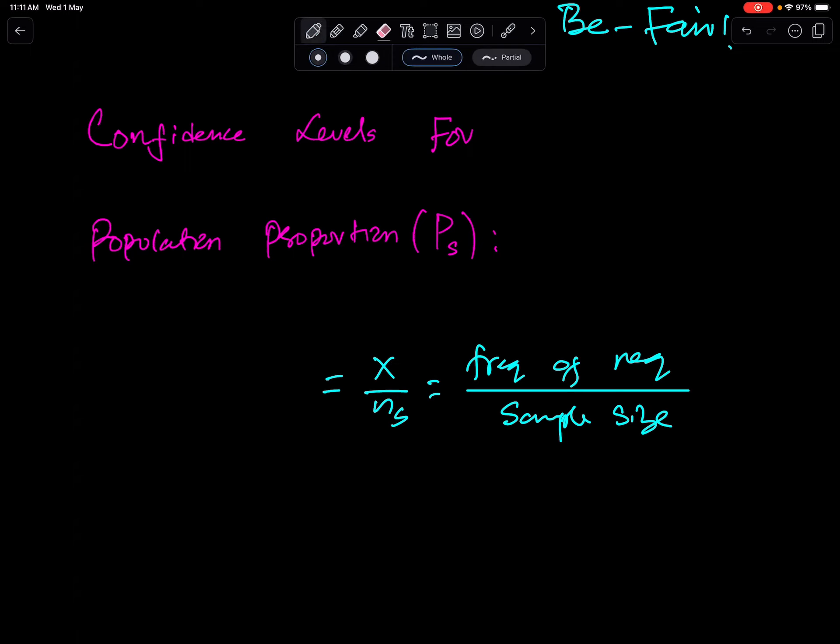You can also write PS in probability form as small p. This is population proportion.